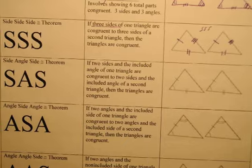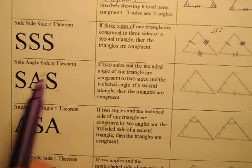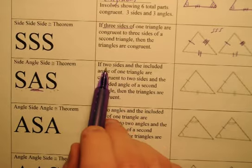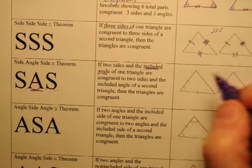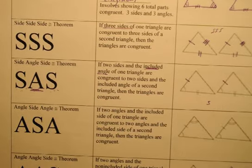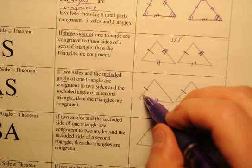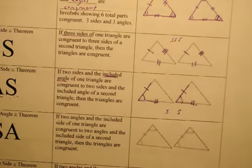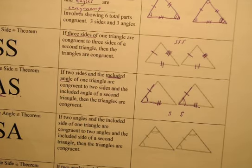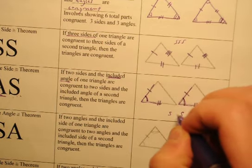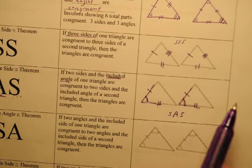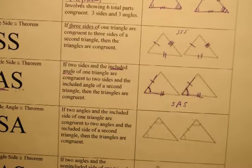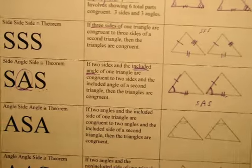The next shortcut is Side-Angle-Side. Notice the angle is sandwiched between two congruent sides. It says if two sides and the included angle — meaning the angle has to be between the two sides — are congruent, the triangles are congruent. In this picture, we've got one set of congruent sides, two sets of congruent sides, and sandwiched between those two sides is a congruent angle. That angle is called the included angle.